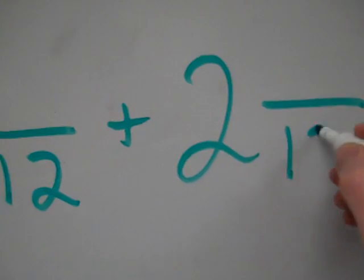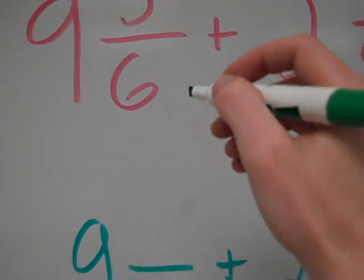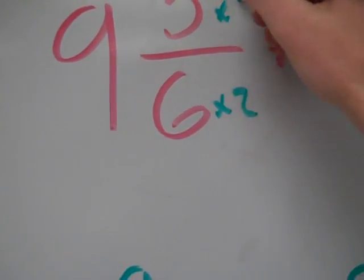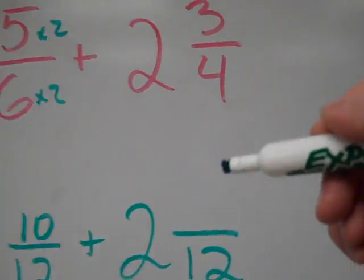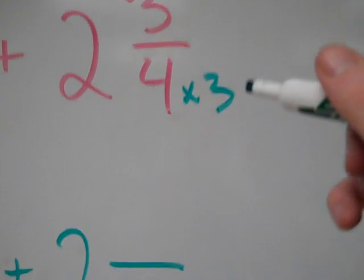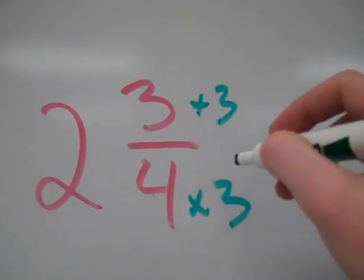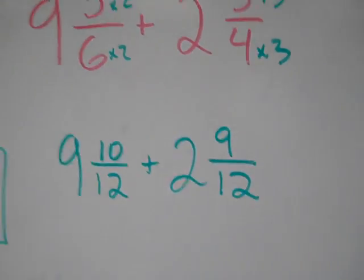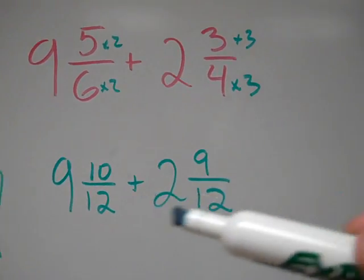So 12 is going to be my denominator on both of these. Now 6 times 2 is 12, so I'm going to do 5 times 2, and that's 10. And then 4 times 3 is 12, so I'm going to do 3 times 3, and that's 9.